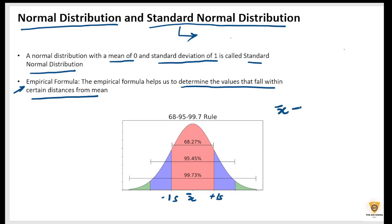X-bar plus minus 1 times standard deviation will contain 68.27% of the values. So it means from here to here, 68.27% of the values.